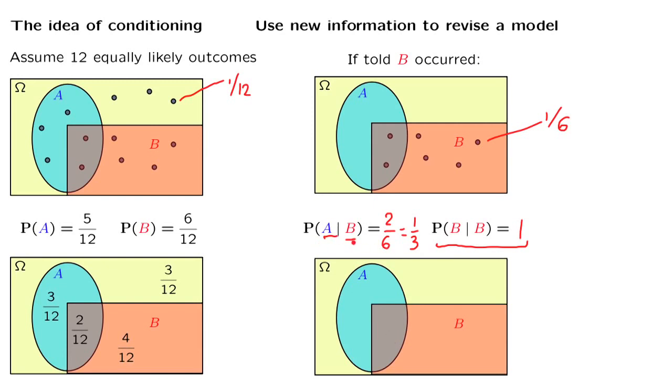So that, given that B happened, the conditional probability of A given B should be equal to one third. By now, we should be satisfied that this approach is a reasonable way of constructing conditional probabilities. But now, let us translate our reasoning into a formula.